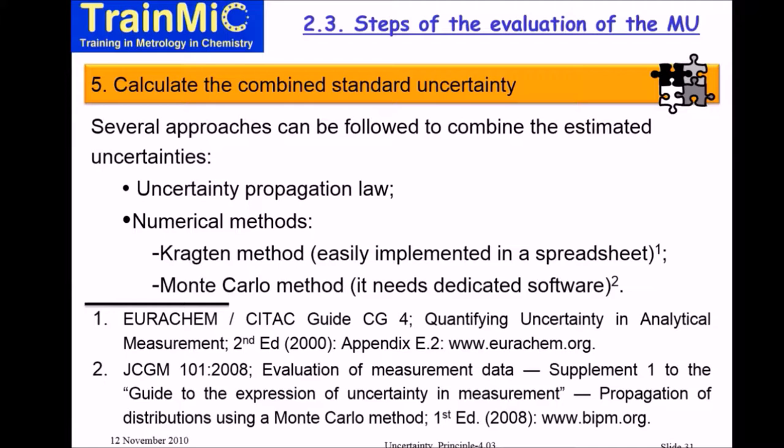There are different strategies. You can use the so-called uncertainty propagation law, or you can use numerical methods that are not based on heavy mathematics like in this case. If the measurement model is complex, you must do some partial derivatives calculation. And you can make your life easier if you use the Kragten method or the Monte Carlo method.